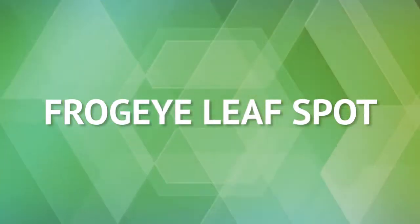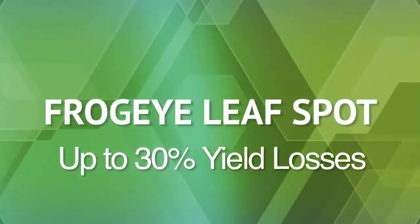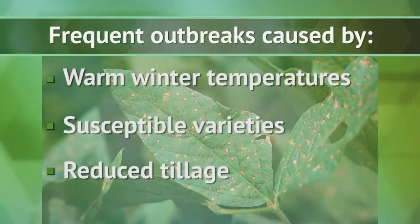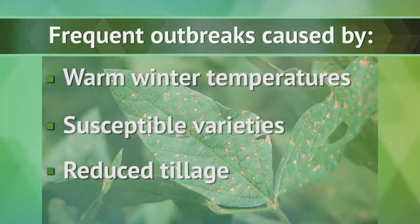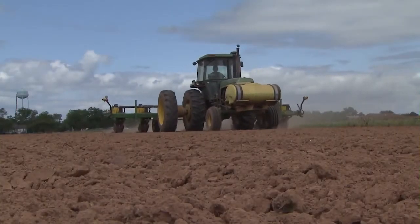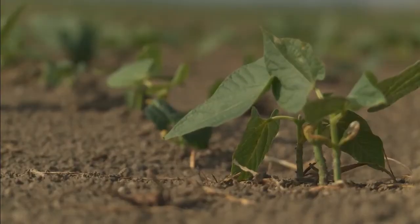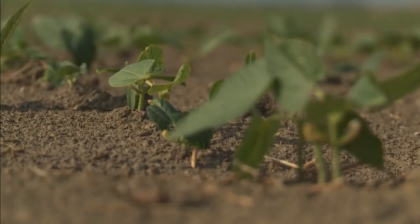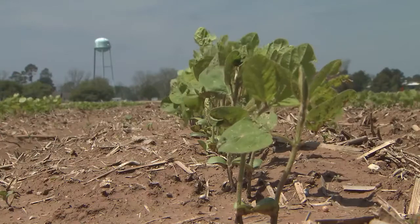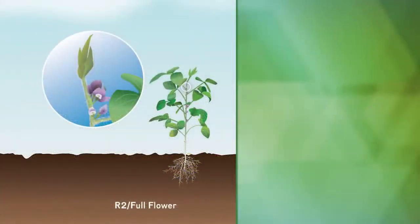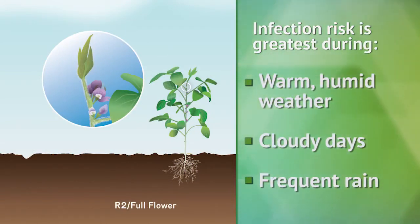Frog eye leaf spot is a common soybean foliar disease in the south, causing yield losses of up to 30 percent during wet years. The disease primarily thrives in infested crop residue and spreads via infected seed and airborne spores. Seed infection is a common means of proliferation. It is mainly spread by spores produced on the leaves of infected seedlings, which become airborne and are dispersed by wind or splashed on nearby plants by rainfall. Although infection may begin at any stage of soybean development, frog eye leaf spot most often occurs after flowering.